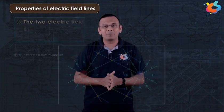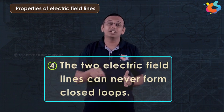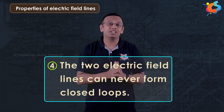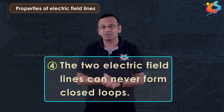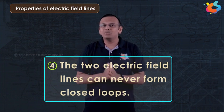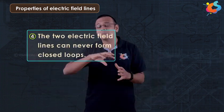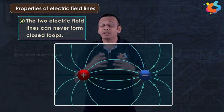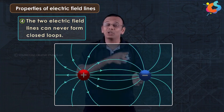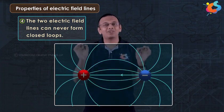The fourth property is that electric field lines can never be closed curves — they can never form loops. This can be explained by the conservative nature of electric fields, which we will study in more detail in the next chapter. Another way to justify this: electric field lines originate from positive charge and go to negative charge, so if they formed a closed loop it would mean they start from a positive charge and return to it — which is a contradiction.